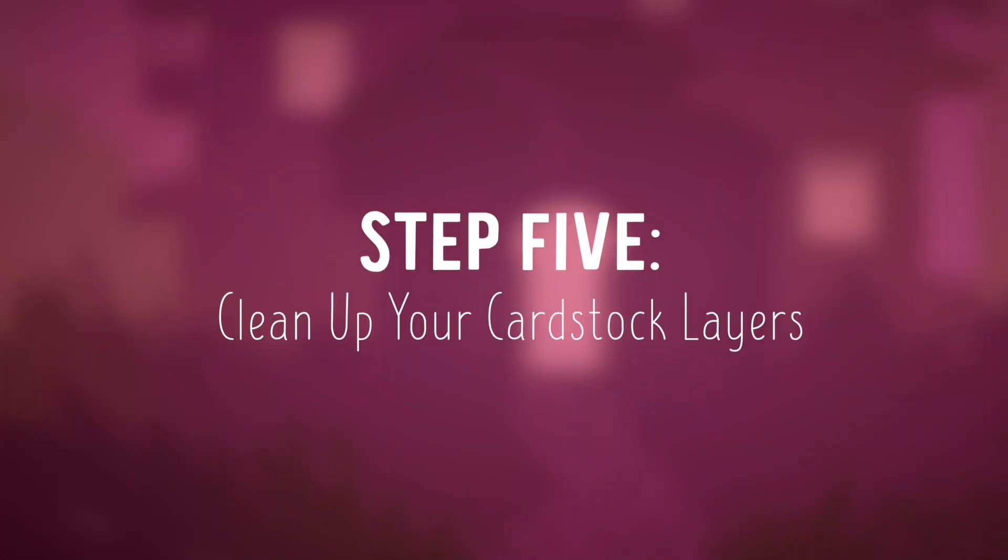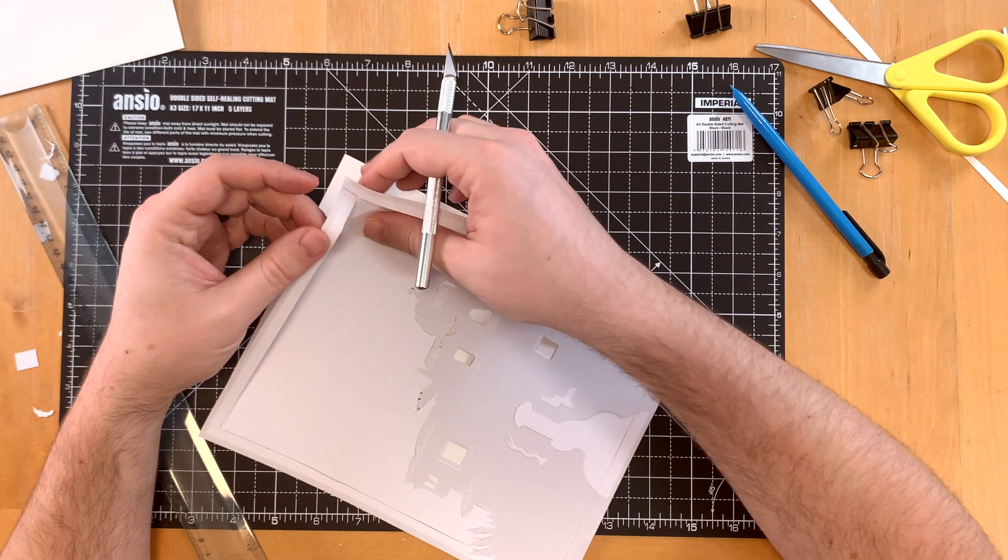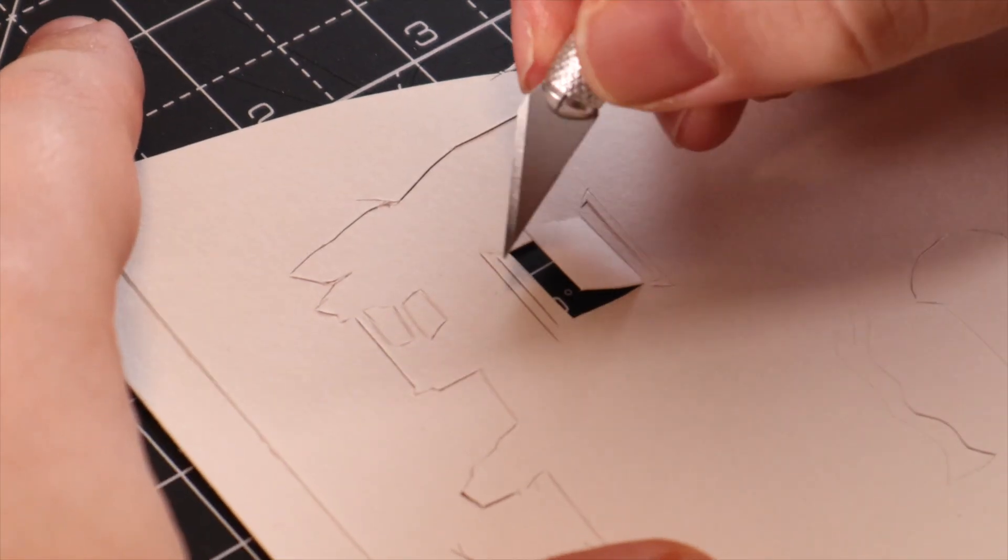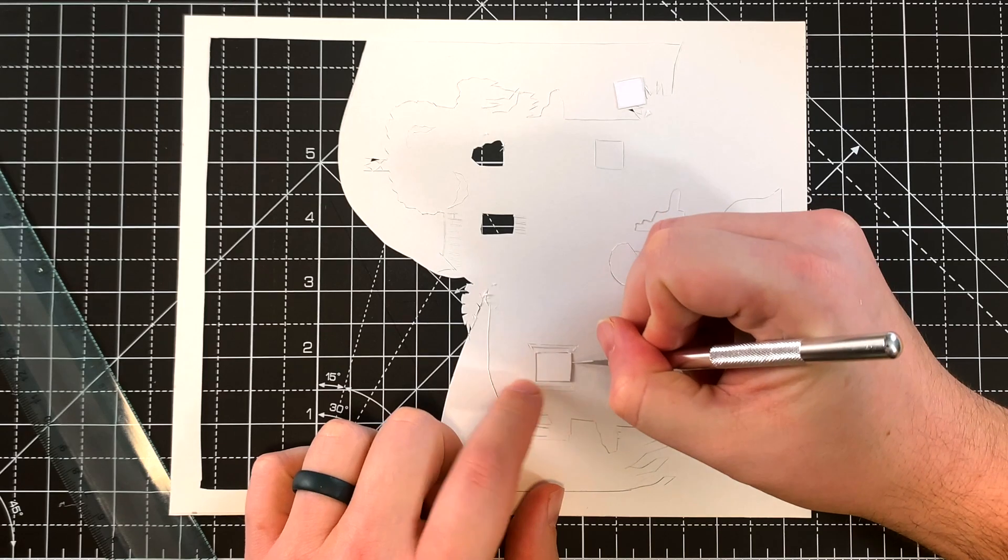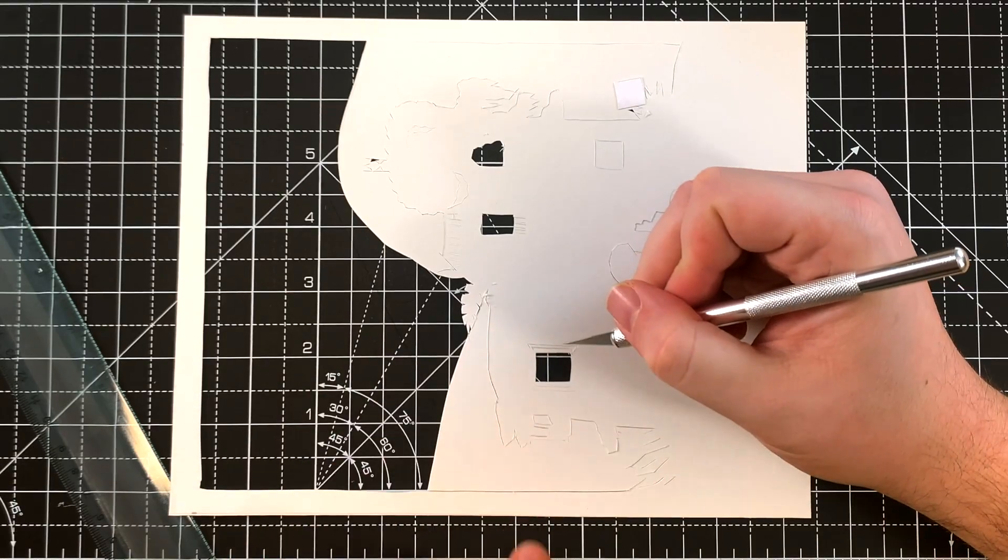Once you're done tracing, you can take off your template and start the fun part, cleaning the cuts on the cardstock layer. There'll be big pieces that won't come off with your original trace, so you'll need to go back and cut what didn't go through. Don't try to pull on the hanging pieces. Just patiently cut until something comes loose.